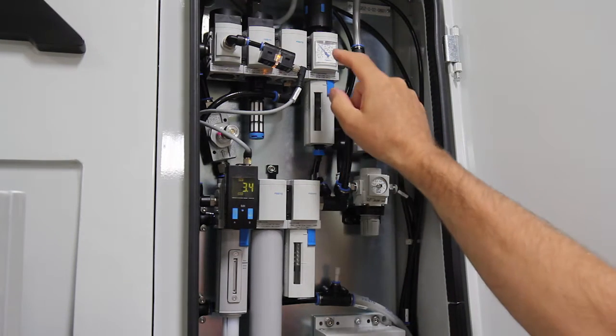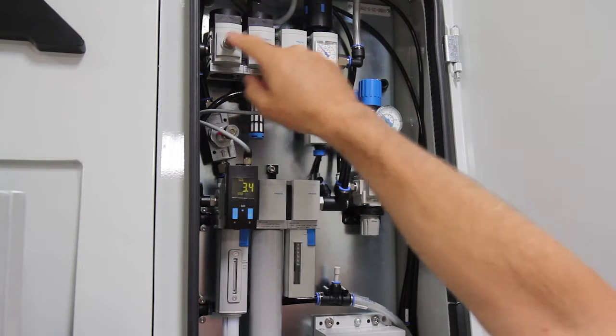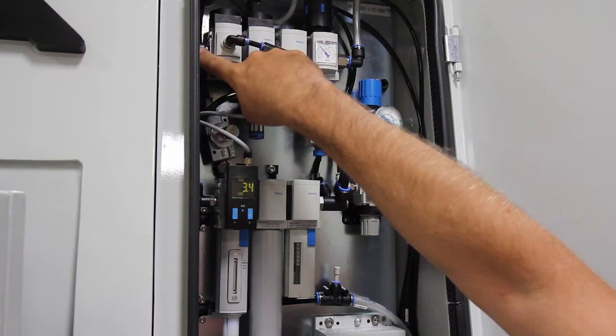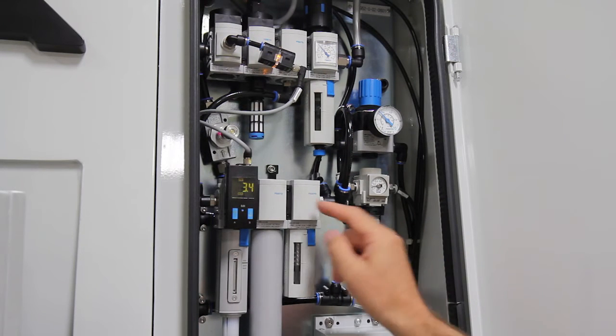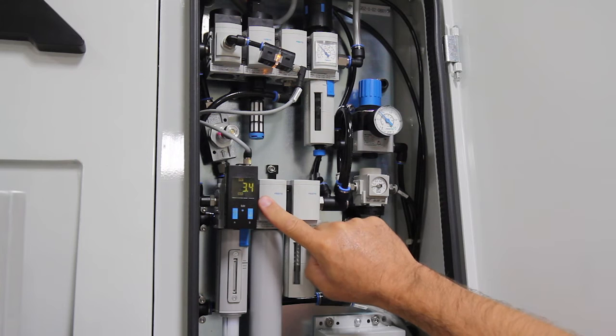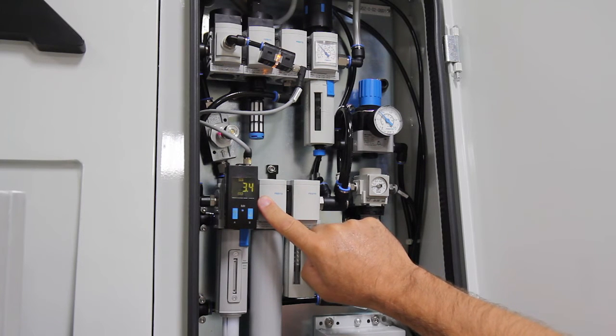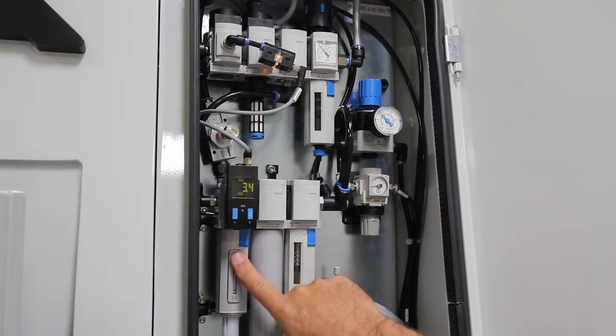Compressed air for the various pneumatic actuators is taken from the system at this point. Next in line is a 0.01 micron filter which also has a user replaceable filter element.